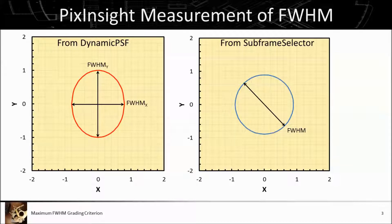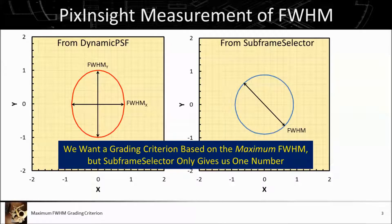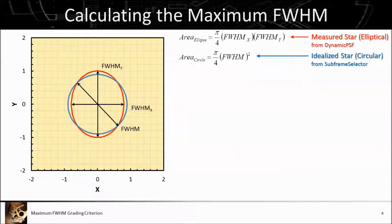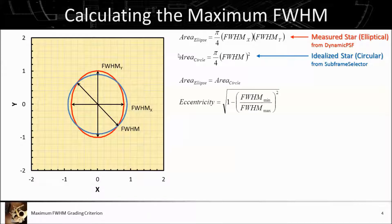We want a grading criterion based on the maximum FWHM. The subframe selector script is only giving us one number — but here's what's going on. The subframe selector script essentially takes results from the dynamic PSF function, so it has access to FWHM X and Y. Basically, what it's doing is taking the area of the ellipse and defining a FWHM for an equivalent circle that has the same area.